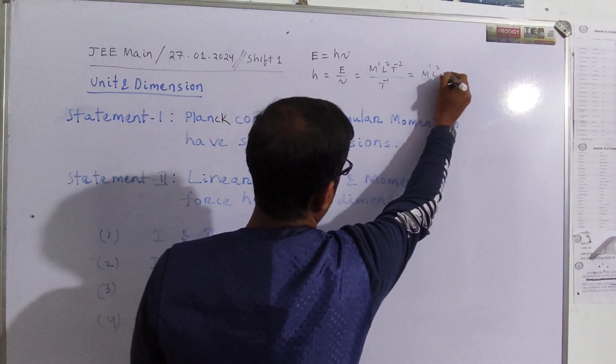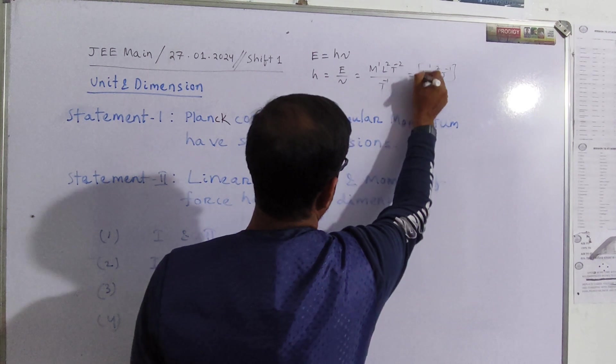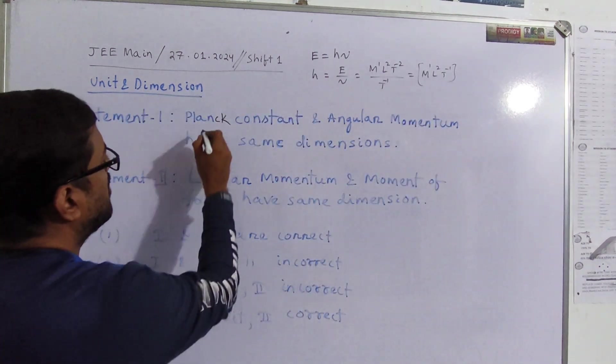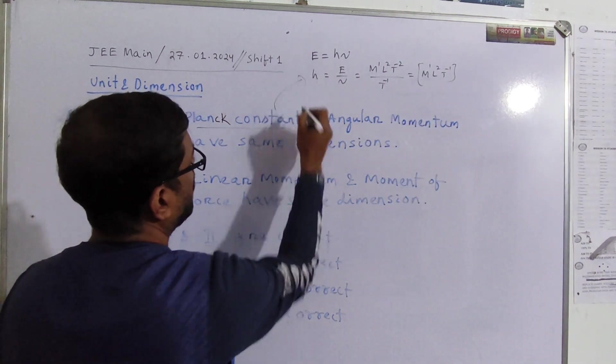Whereas this frequency is actually second inverse, so this is time inverse, so it will become M1 L2 T minus 1. This is the dimensional formula of Planck's constant.